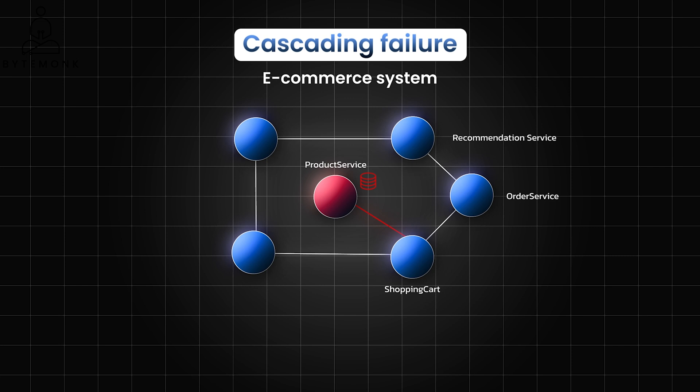The first level impact would be on the shopping cart. The shopping cart service, which relies on the product service to display product details, starts receiving errors, so customers can't add items to their carts, leading to frustration and lost sales. With the shopping cart malfunctioning, the order service cannot process new orders correctly — customers are unable to complete their purchases, resulting in further revenue loss. In a third level impact, the recommendation service uses data from the order service, such as past purchases, to generate personalized recommendations. As the order service struggles, the recommendation service receives incomplete or inaccurate data.